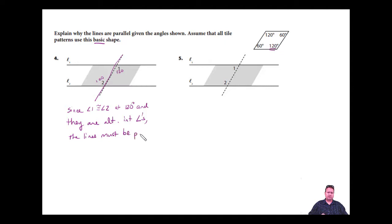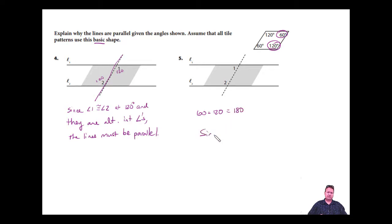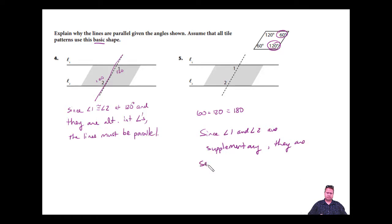We are essentially using the converse of the alternate interior angles theorem. Looking at angle one and angle two as 60 and 120: 60 plus 120 equals 180, making them supplementary. Since angle one and angle two are supplementary and they are same side interior angles, the two lines must be parallel — using the converse of the same side interior angles postulate.